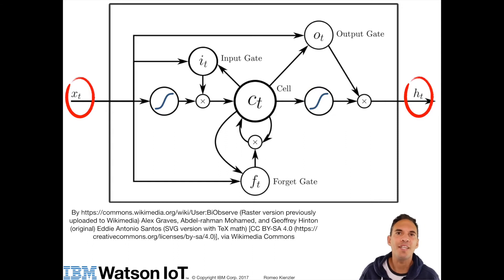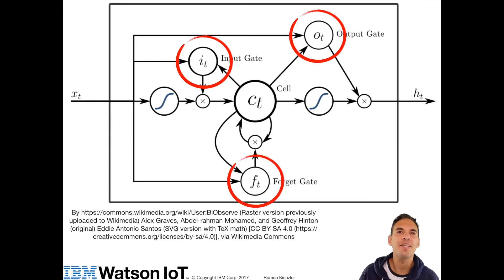So the first thing we notice is that there is no direct connection between Xt and Ht. All data flows through Ct, which is the so-called cell state. Cell state is the actual memory of the LSTM neuron. Notice that there are three additional units present in an LSTM neuron: an input gate, an output gate and a forget gate. Those three gates are controlling the state of Ct. The way how this is controlled is as follows.